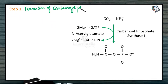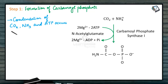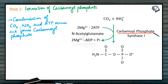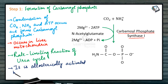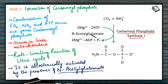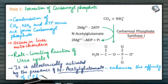Step 1: Formation of carbamoyl phosphate. Condensation of carbon dioxide, ammonia, and ATP occurs to form carbamoyl phosphate. This condensation occurs in the presence of the enzyme carbamoyl phosphate synthase 1 (CPS1). This entire reaction occurs in liver mitochondria. This reaction is the rate-limiting reaction of the urea cycle. It is allosterically activated by N-acetylglutamate, which enhances the affinity of CPS1 for the ATP molecule.